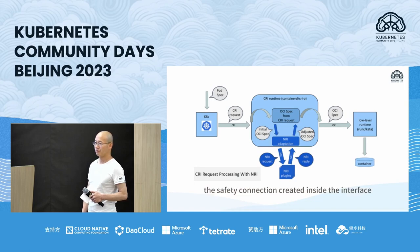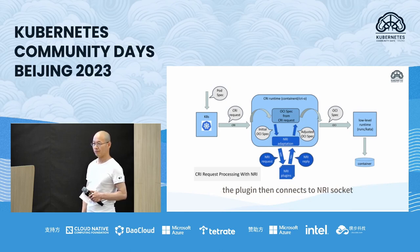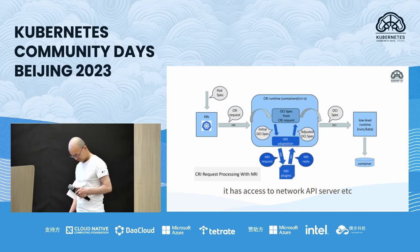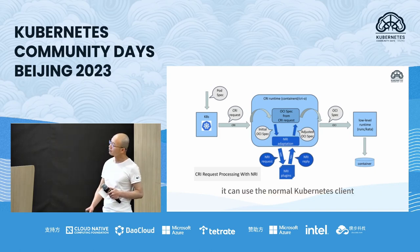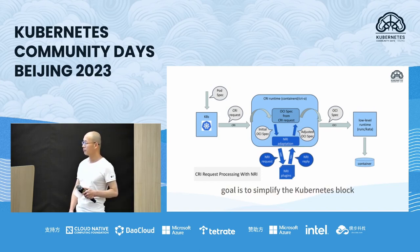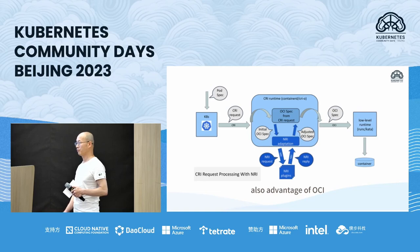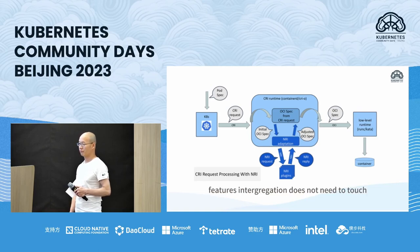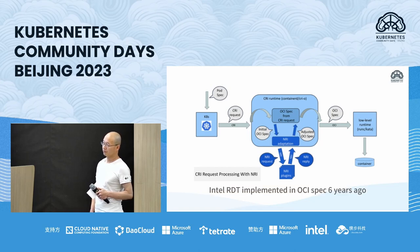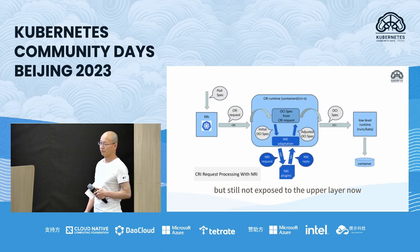The key part is the safe connection created inside the interface. NRI allows deploying plugins as a Kubernetes DaemonSet. The plugin then connects to the NRI socket and has access to the network, API server, etc., using the normal Kubernetes client. One of the plugin goals is to simplify the Kubernetes stack. An advantage of the OCI level is that new feature integration does not need to touch everything. For example, Intel RDT was implemented in OCI spec six years ago but is still not exposed to the upper layer.